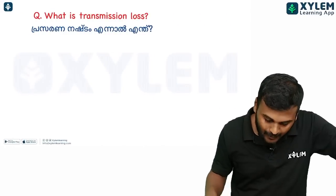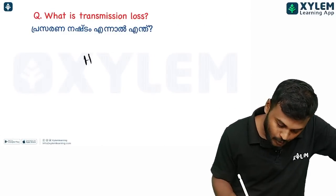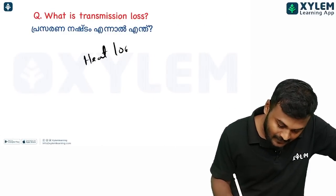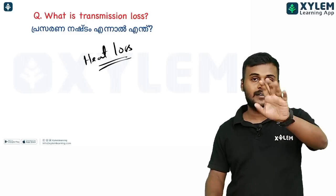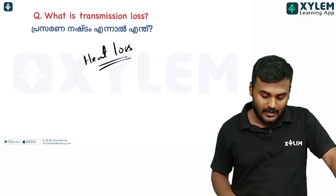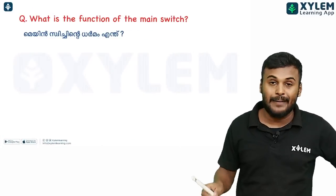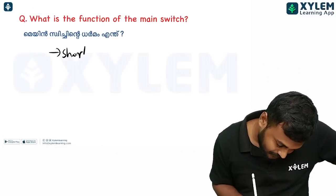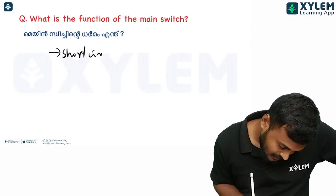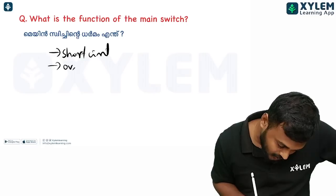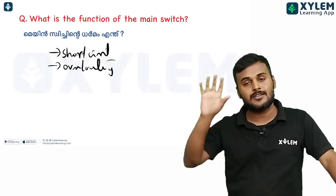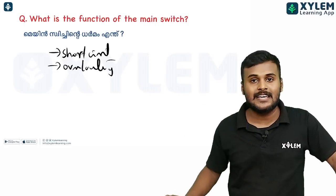What is transmission loss? The function of the main switch is to protect against short circuits and overloading — these two phenomena protect our electrical appliances.